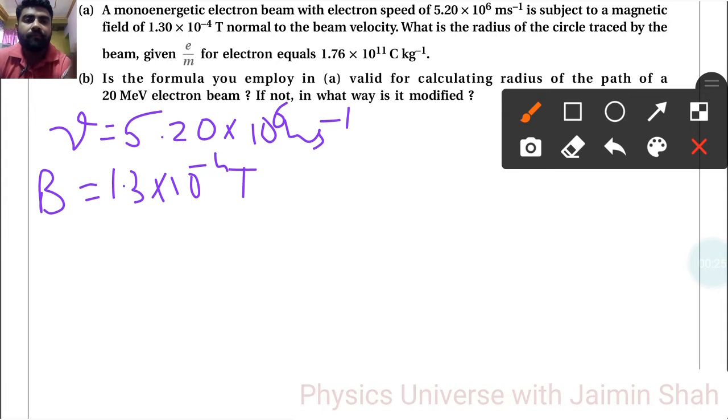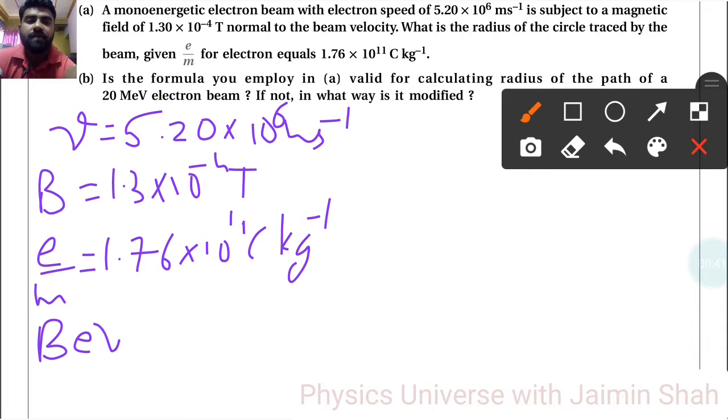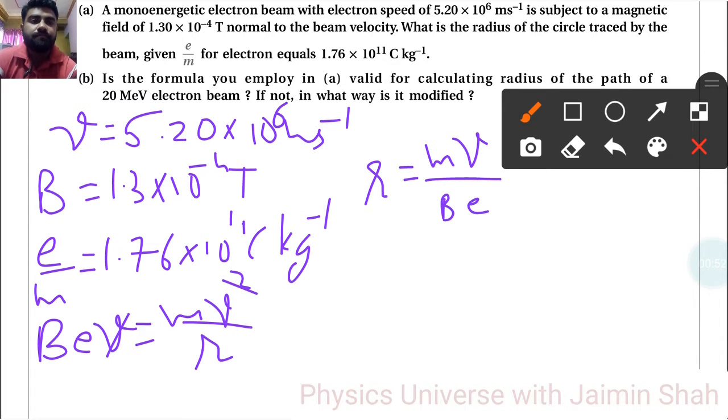Given e/m = 1.76 × 10¹¹ C/kg. We have to find the radius of the circle. We know that the formula BEV = MV²/R. One V gets cancelled out, so R = MV/BE.